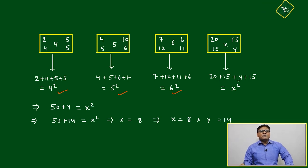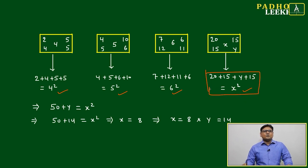This is 4 square, 5 square, 6 square. Here, 20 plus 15 plus y plus 15 equals x square. This gives us 50 plus y equals x square. This will give us the easiness to solve this question.